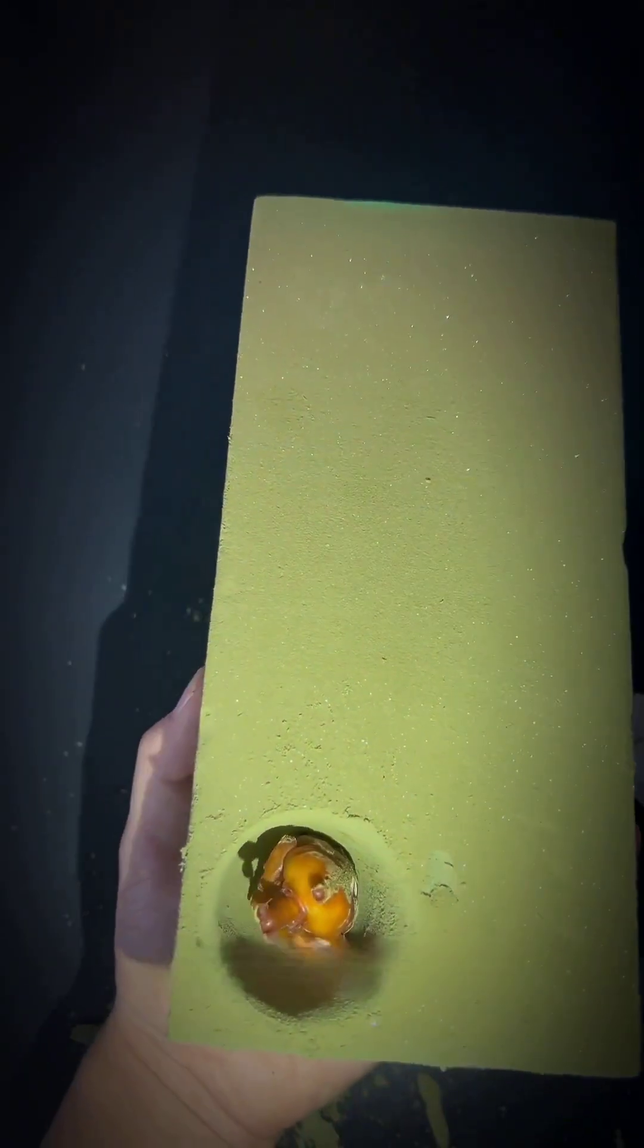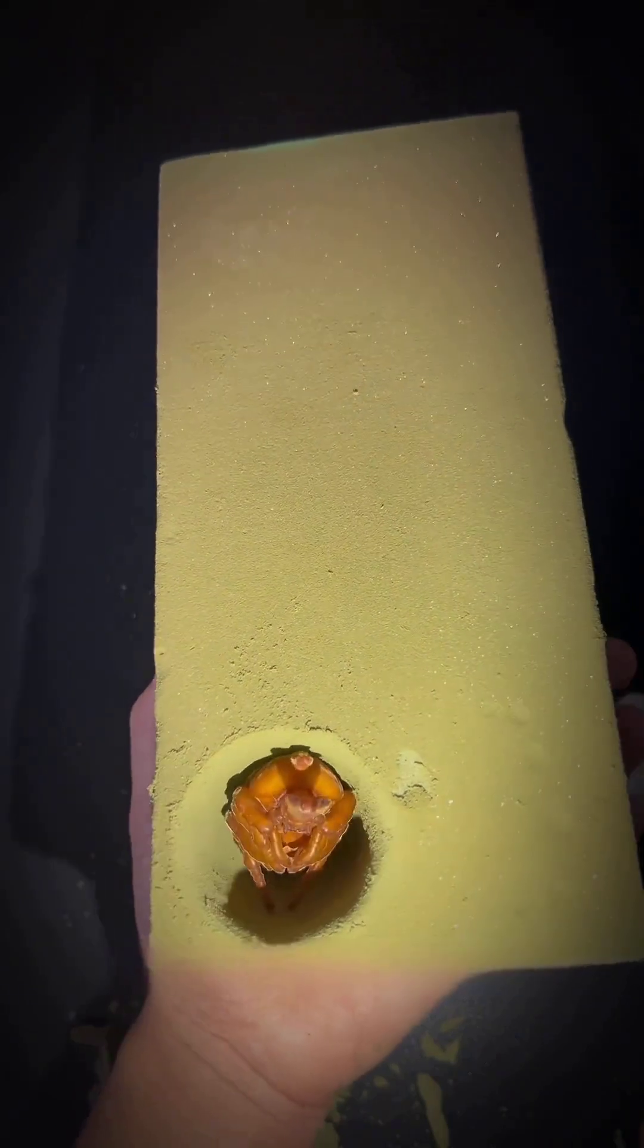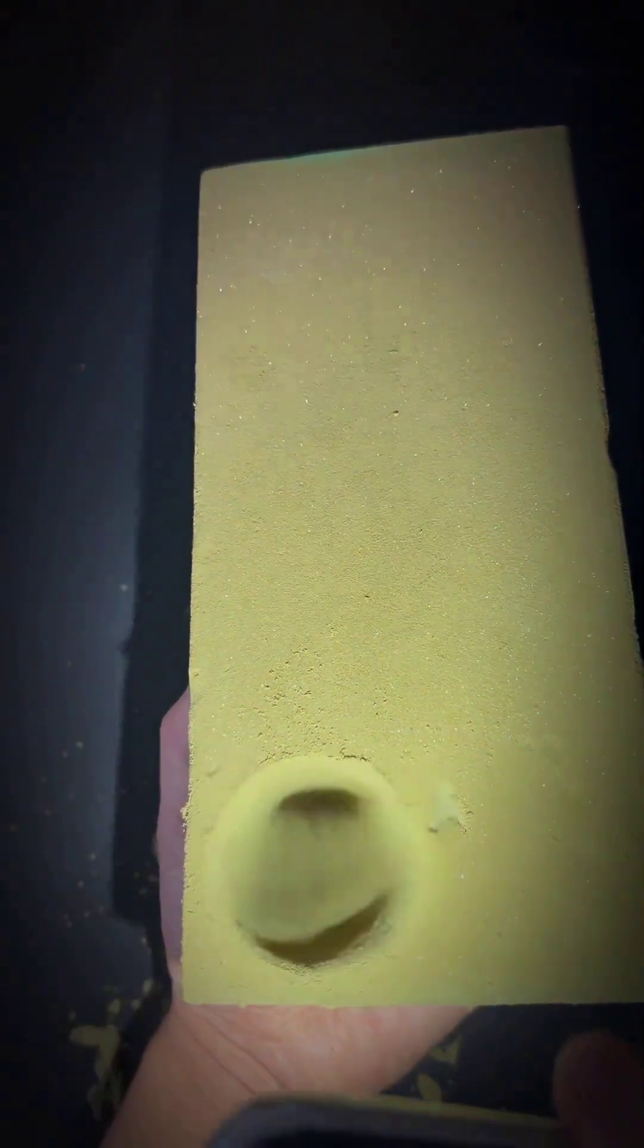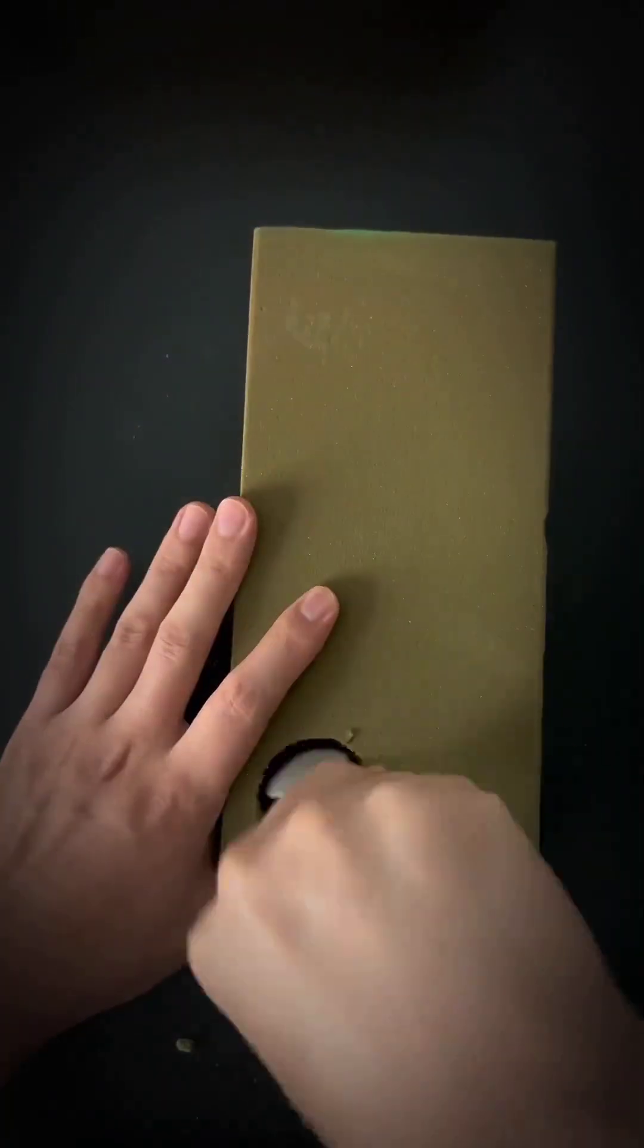Get dry floral foam from a flower shop. Measure it against the larva, then start carving. Make the width a bit bigger than the beetle. Deeper is better, just don't break through.